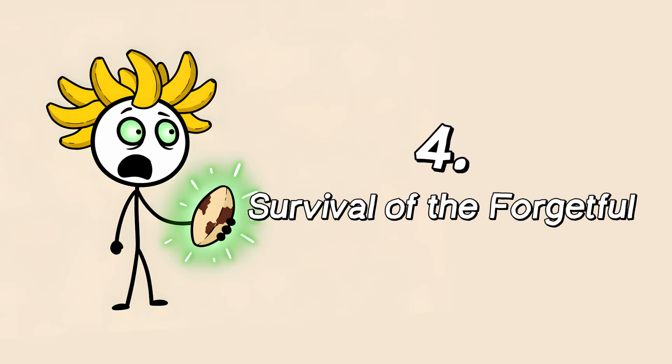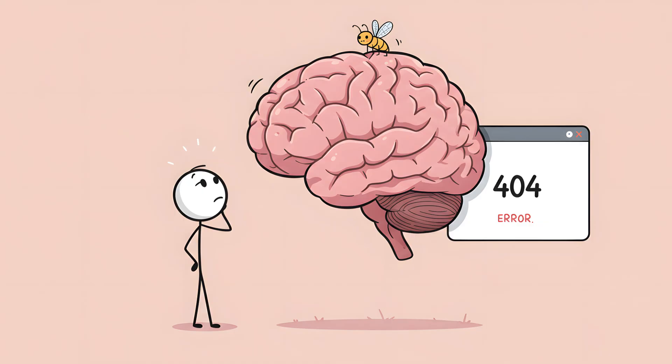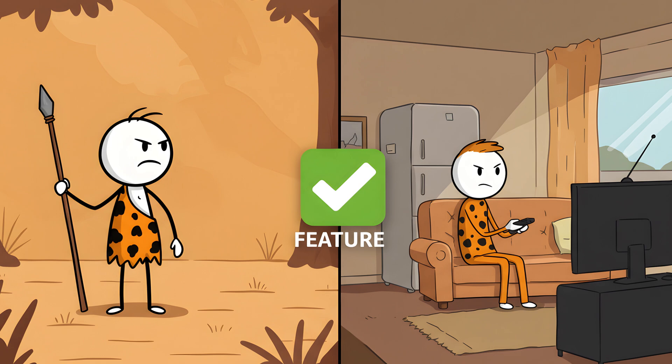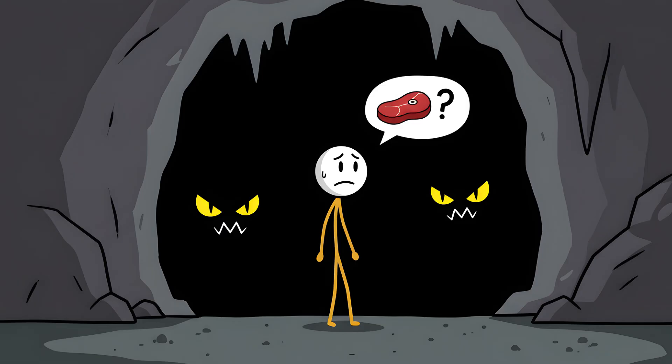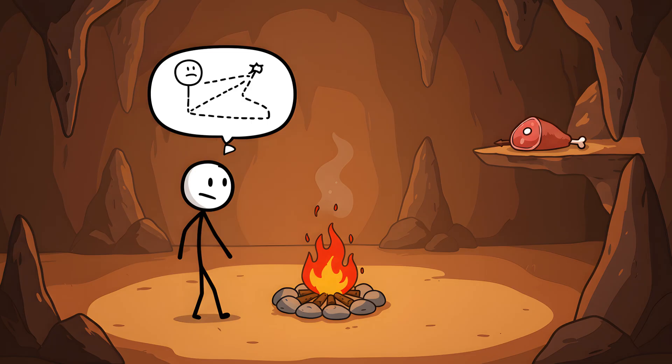Number four, survival of the forgetful. This entire system sounds like a massive design flaw, a bug in our mental software. But what if it's not a bug? What if it's a feature? An ancient evolutionary feature that's just not very useful in a world of refrigerators and Netflix. Let's rewind a few hundred thousand years. You're not in a cozy living room. You're in a cave. You're not craving chips. You're desperately trying to remember where you stored the dried meat before the saber-toothed hyenas find it. Inside the cave is one context. Safe, family, fire, food storage.